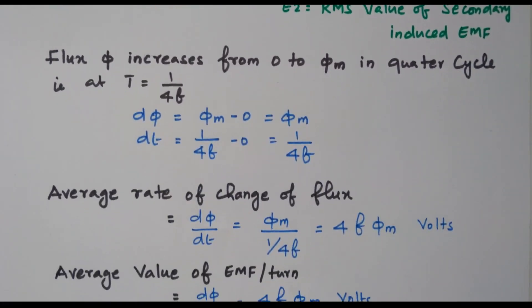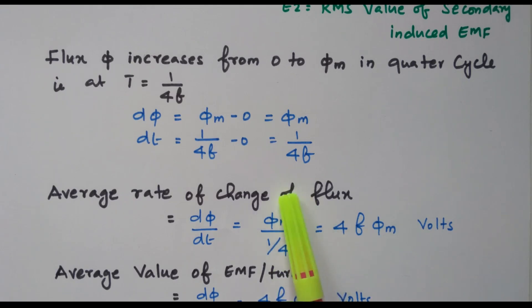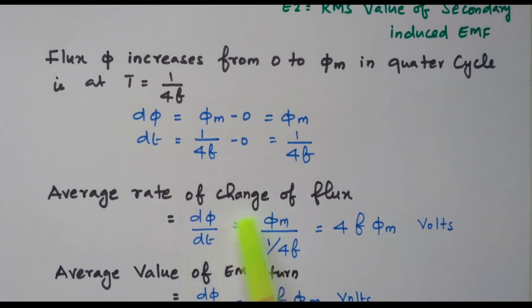The average rate of flux, that is dφ/dt, equals φM divided by 1/(4F). So 4F goes to the numerator, giving an average rate of flux of 4FφM.